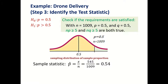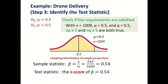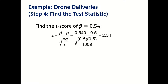The sample statistic will be p-hat — use x divided by n — which is 0.54, which we can easily calculate from the problem. The test statistic will be the z statistic, the z-score for this p-hat. Using the formula and going through the calculation, you will find the z-score for this p-hat is 2.54.